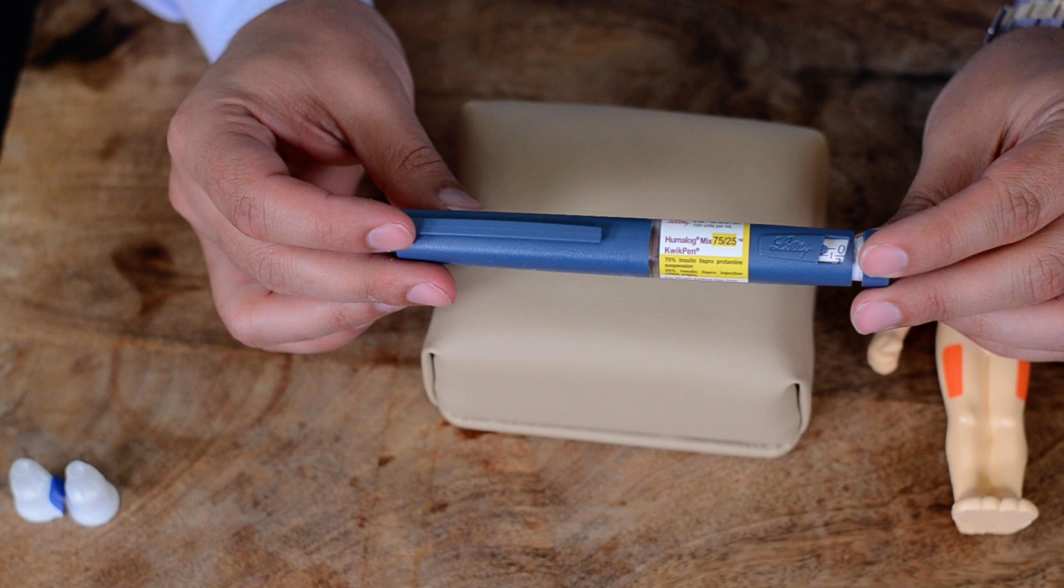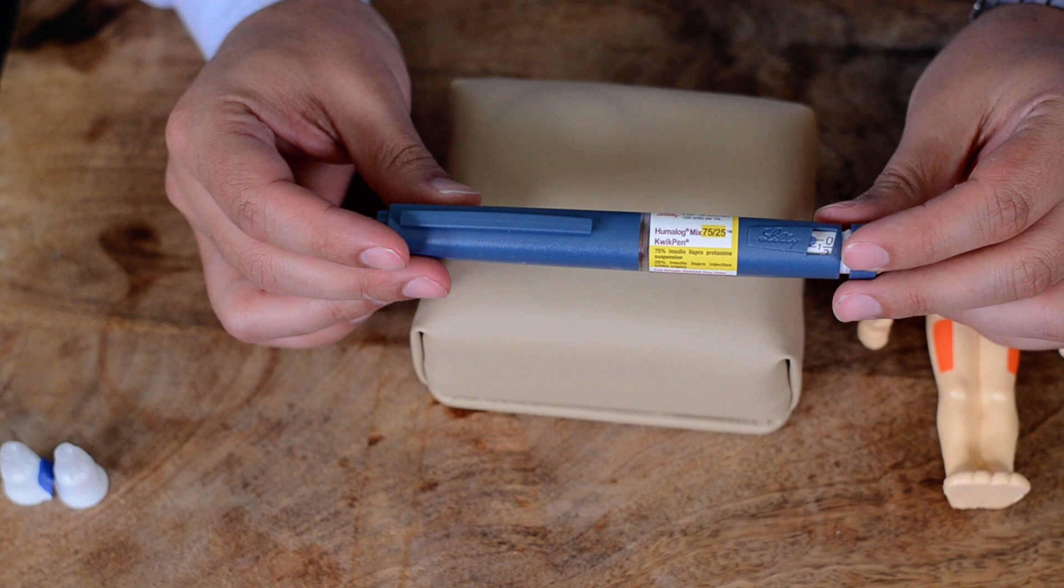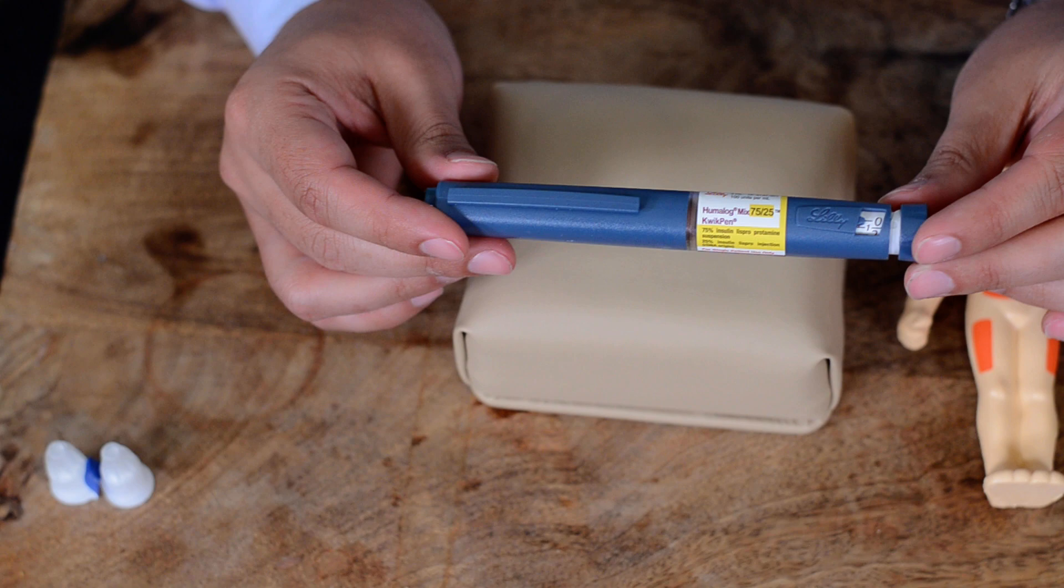Alright everyone, we are going to demonstrate how to use Hemolog 7525. So what does 7525 mean? There are actually two insulins in this one pen.